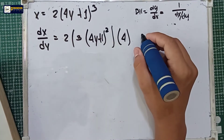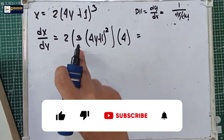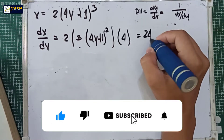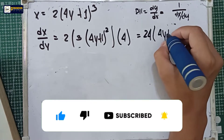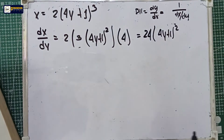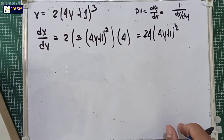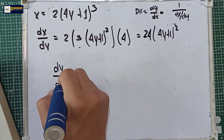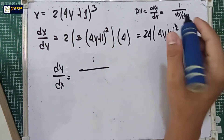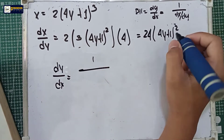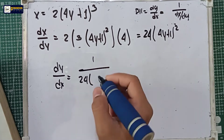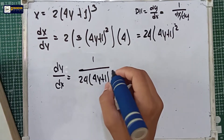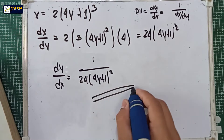So dx over dy is equal to 4 multiplied by 3 multiplied by 2, which is 24, times (4y + 1) squared. By the use of D11, the inverse function rule, dy over dx is equal to 1 over dx over dy, so the final answer is 1 over 24(4y + 1) squared.